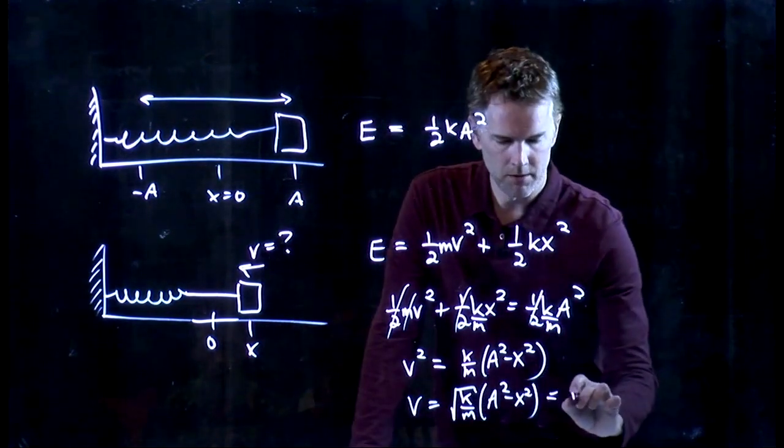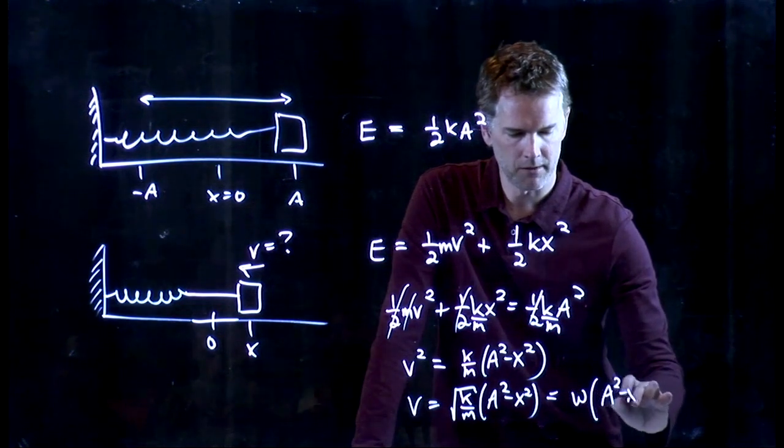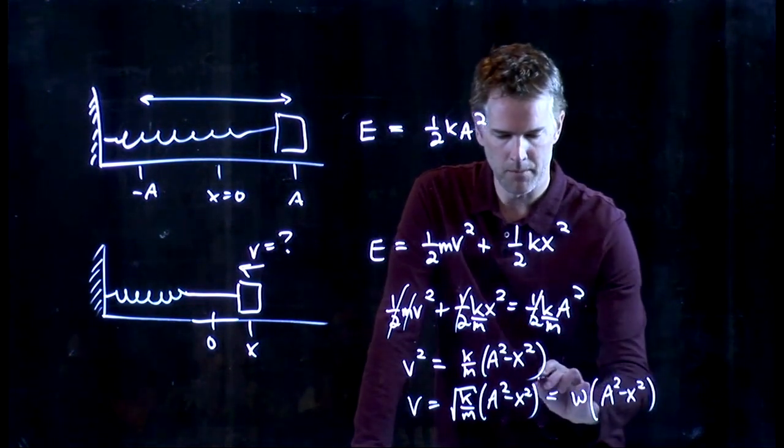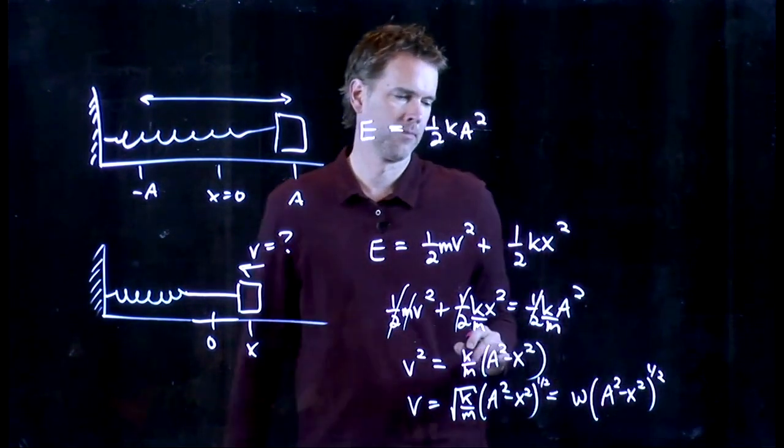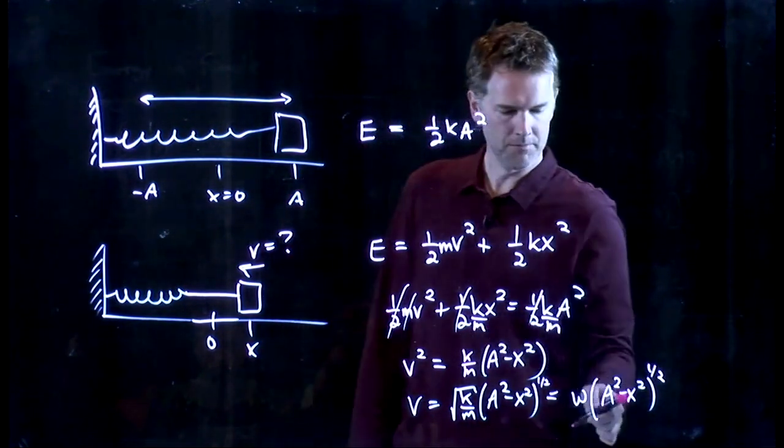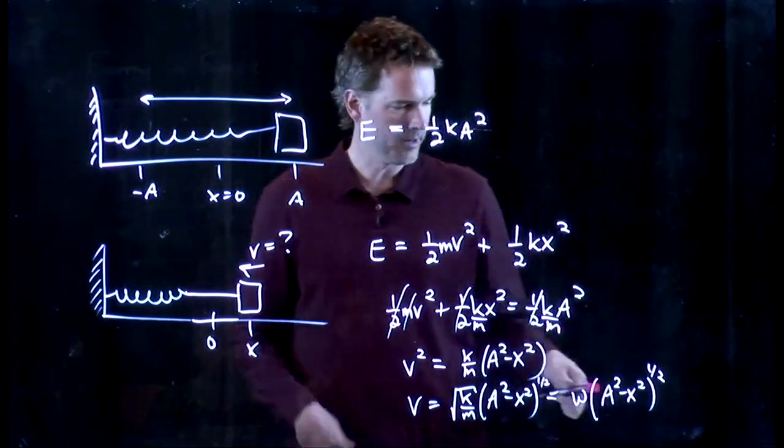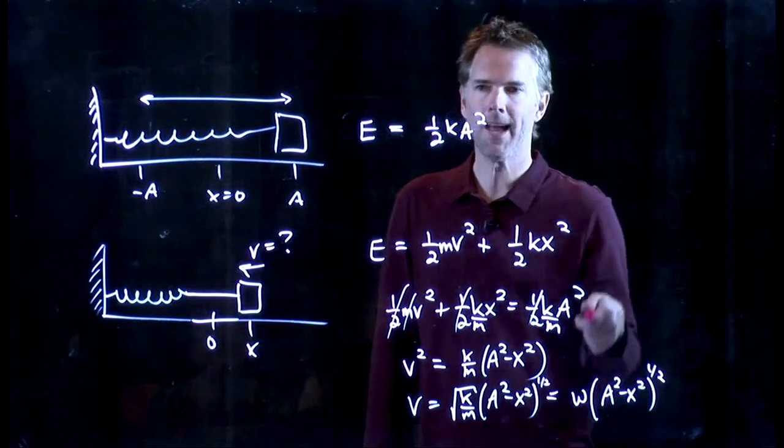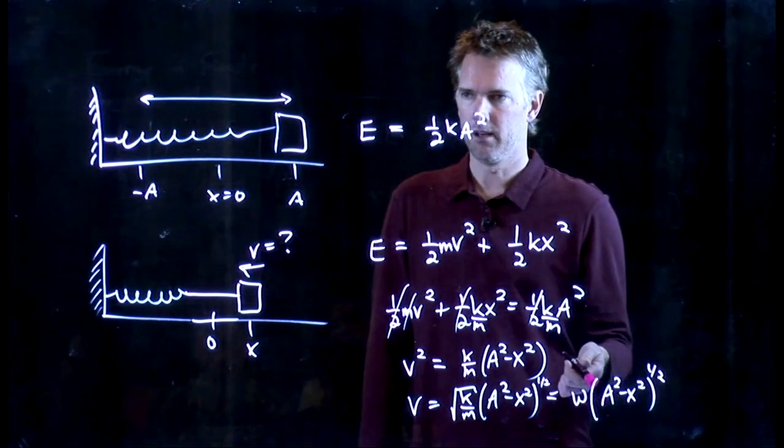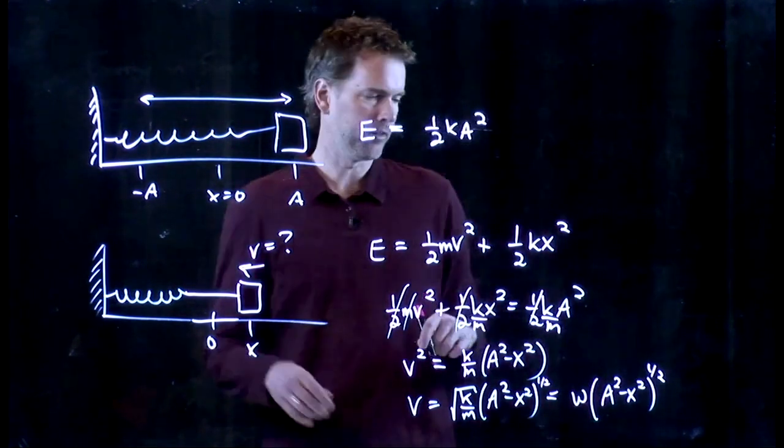V is square root k over m times a squared minus x squared. And that is omega times the square root of a squared minus x squared. And let's convince ourselves that this is the old solution in the case where x equals zero. If I put x equals zero in there, that thing goes away and I just get omega times a.